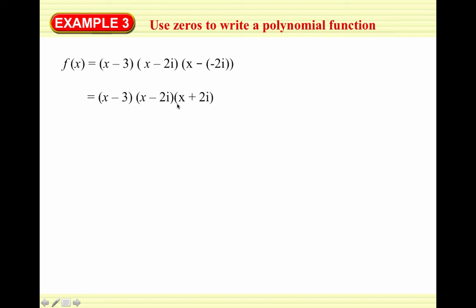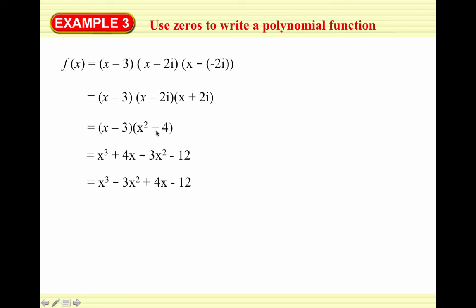So f(x) = (x - 3)(x - 2i)(x + 2i). We multiply x - 2i and x + 2i first since they're conjugates — FOILing gives x² + 2ix - 2ix - 4i² = x² + 4 (since i² = -1). Then we FOIL again with (x - 3): x³ + 4x - 3x² - 12. Writing in standard form (decreasing degree): f(x) = x³ - 3x² + 4x - 12.